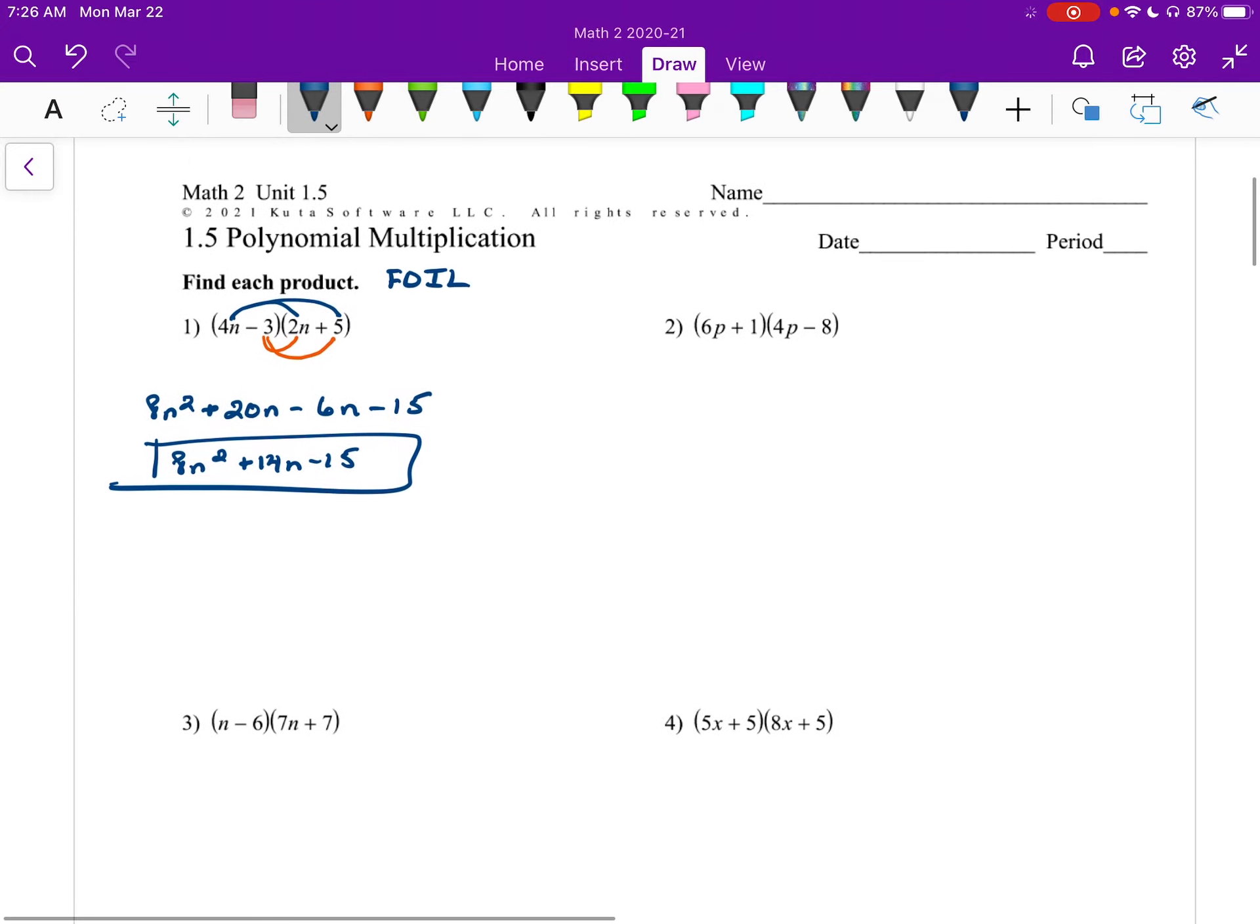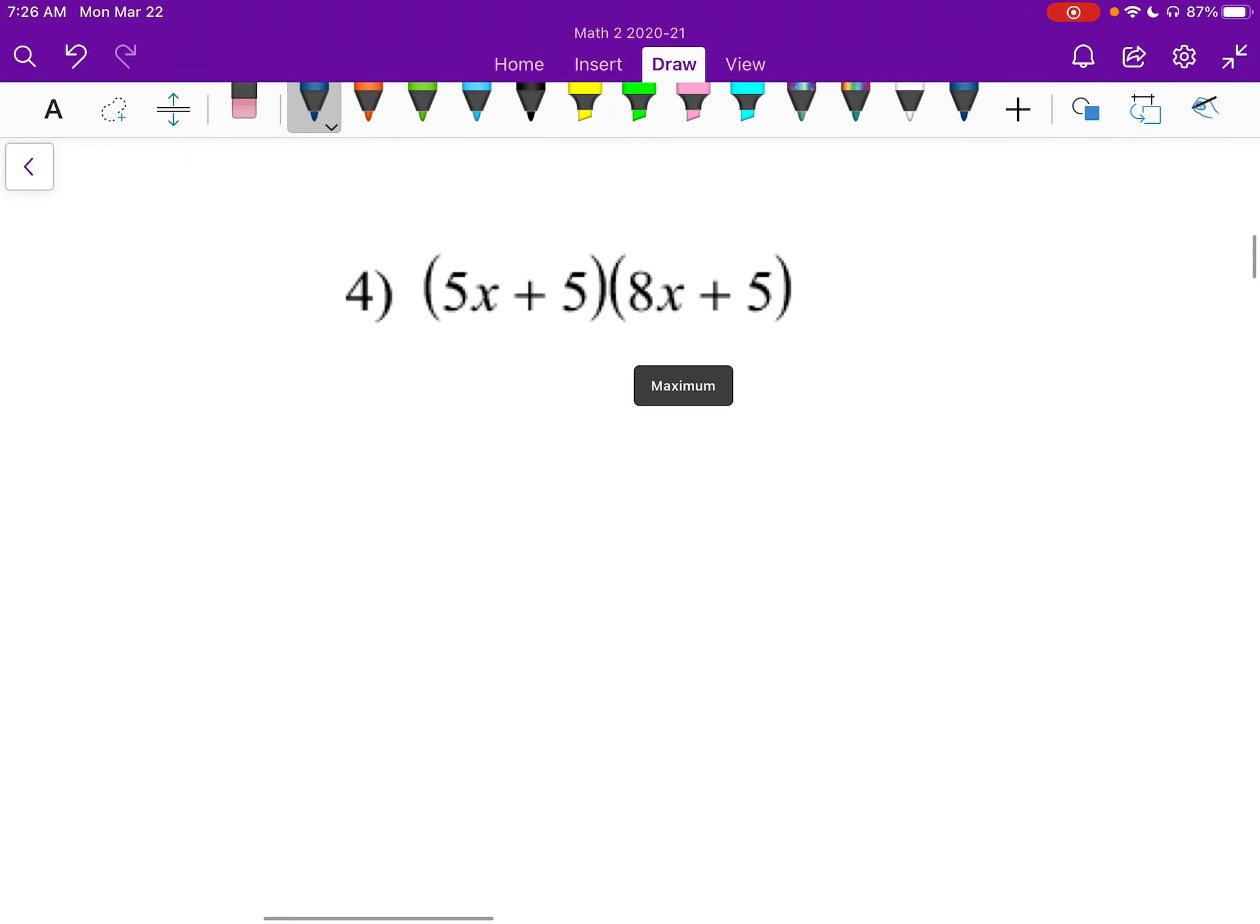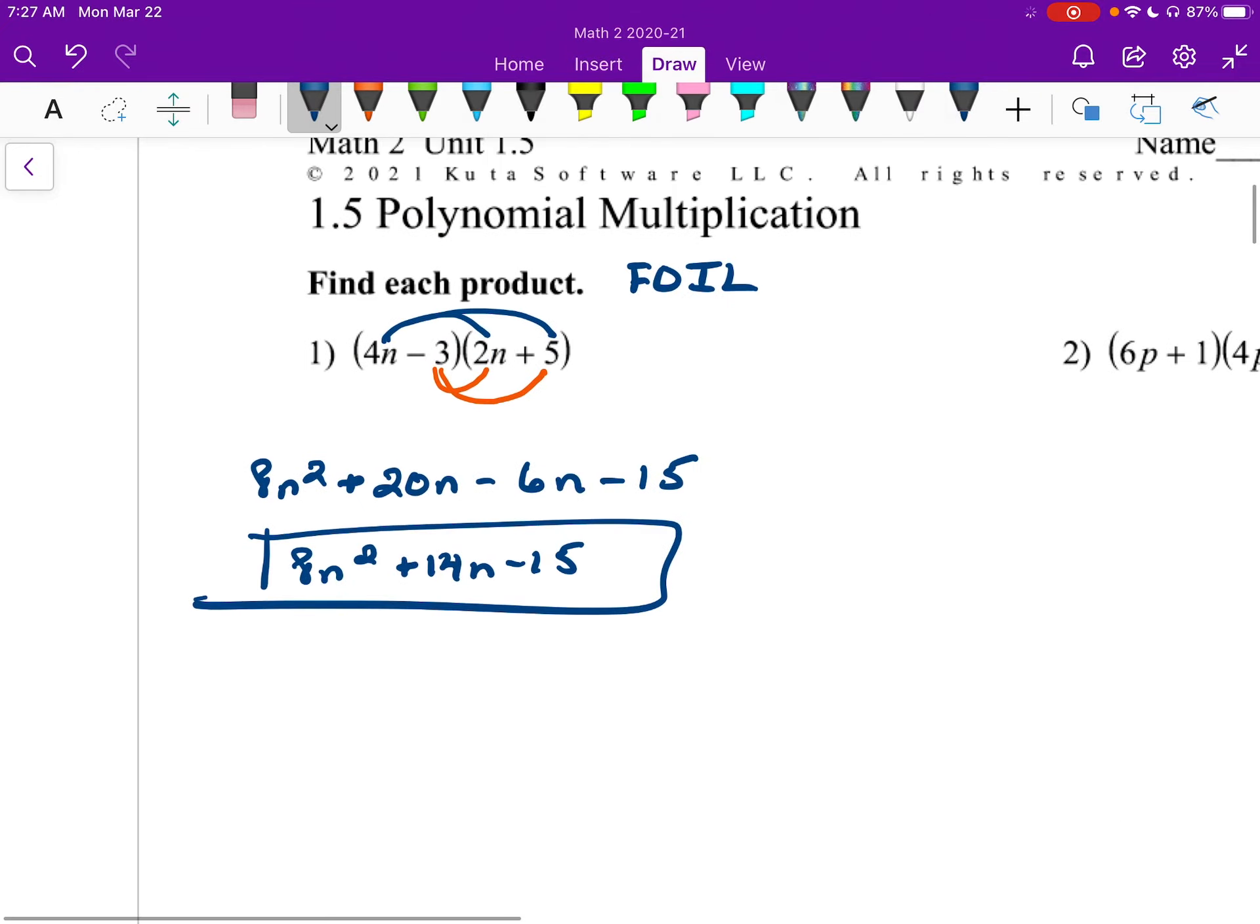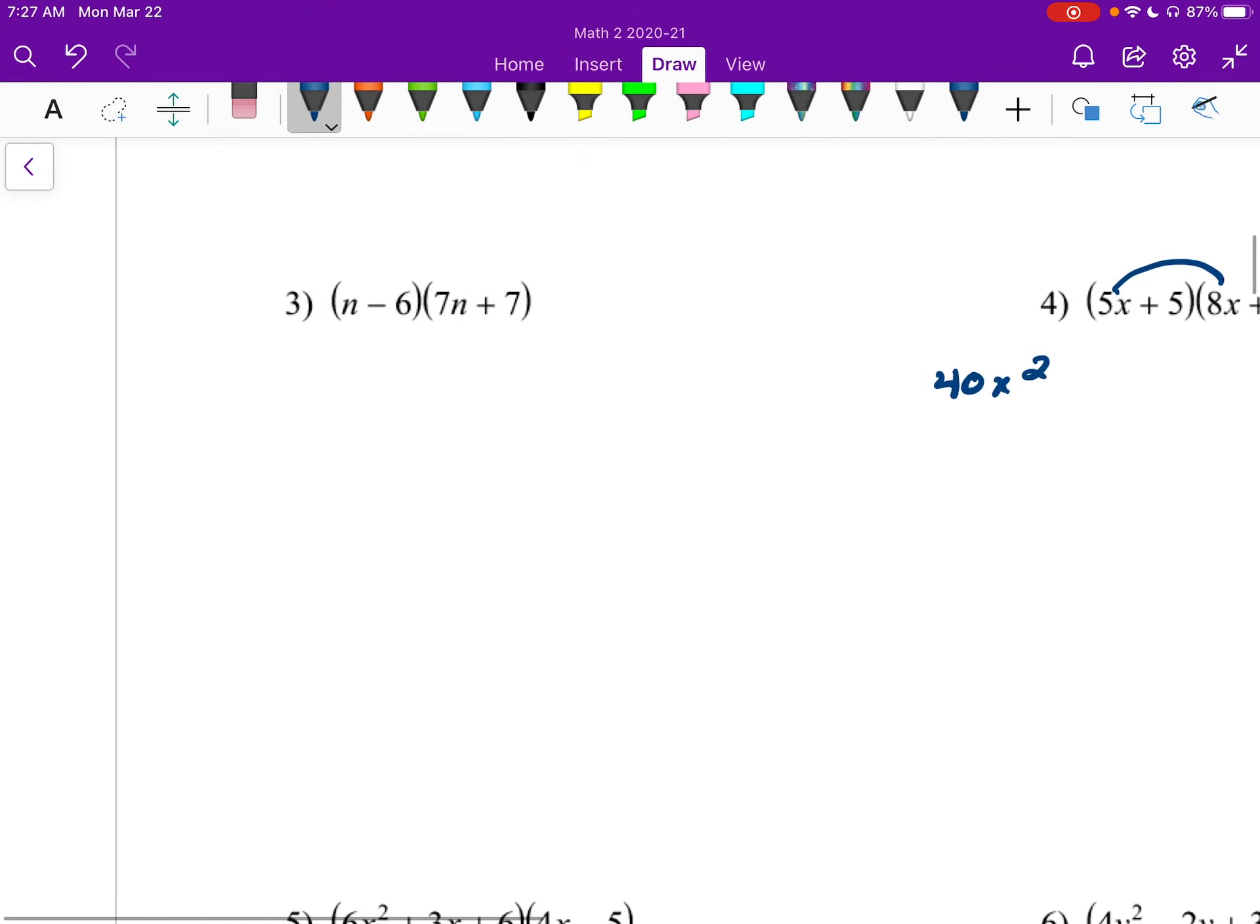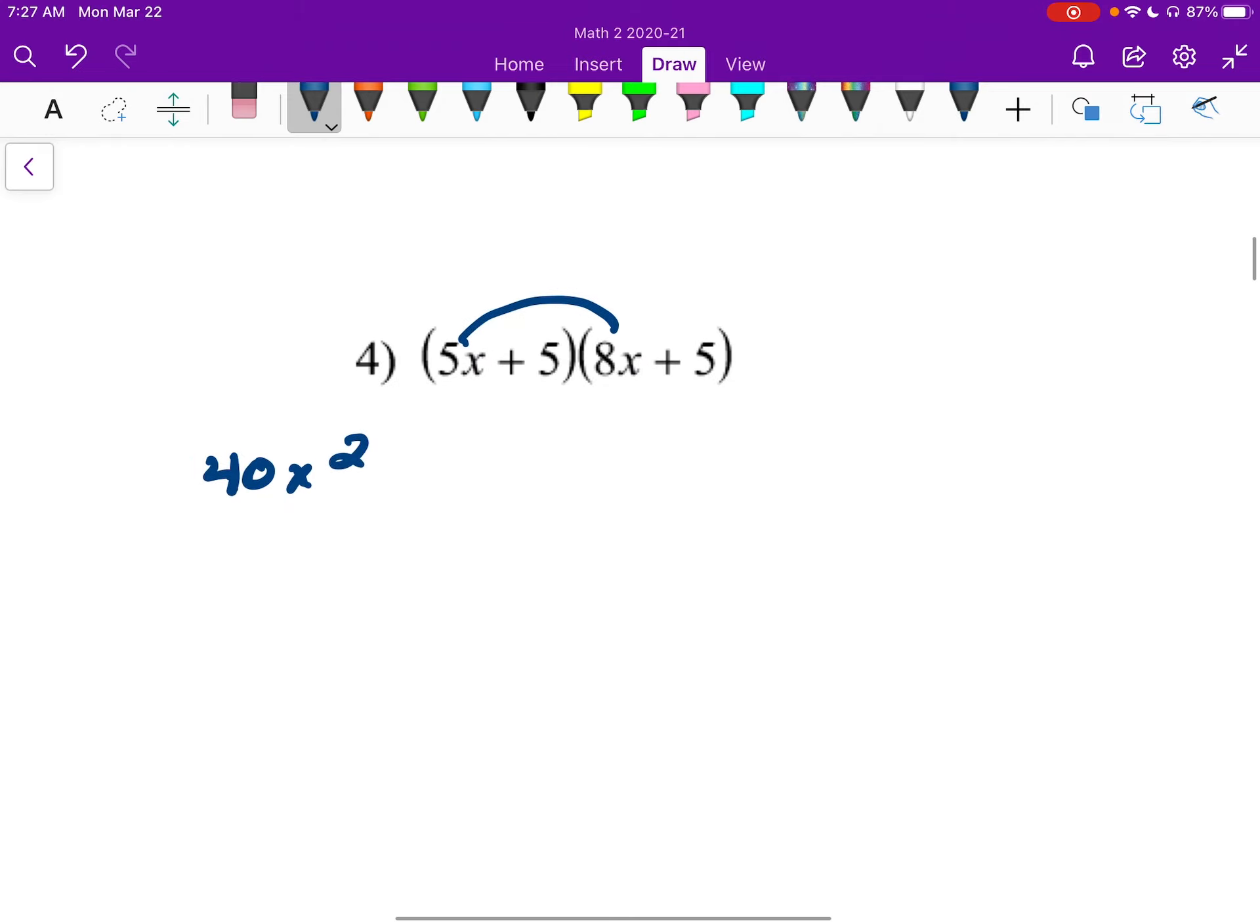Let's do another binomial. Maybe we'll do number 4. 5 and 8 gives me 40x squared. Oops, did I do that one right in the last one? Yeah. Alright, I have my 5 times 8 gives me 40, and then I have an x times an x, which gives me 40x squared, right?